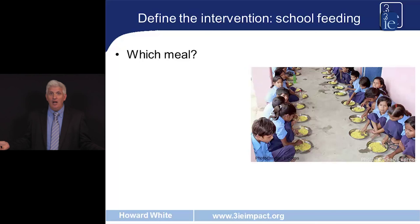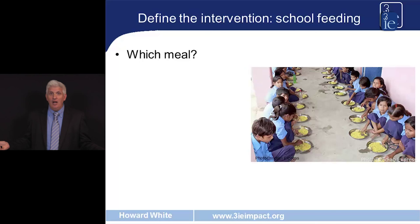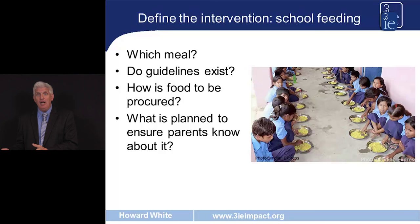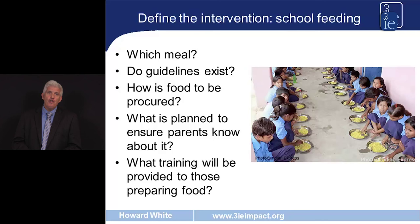What is the intervention? It's school feeding. But there are many specific details we need to be aware of to construct the theory of change and to evaluate the intervention. Which meal is being provided — breakfast, midday meal, or mid-morning snack? Do guidelines exist as to the content of the meal? How is the food going to be procured? What's planned to ensure that parents, including parents whose children are not currently in school, know about the programme? And what training, if any, is going to be provided to those responsible for preparing the school meal?